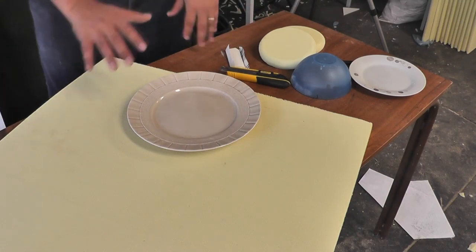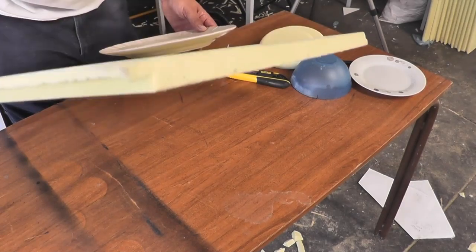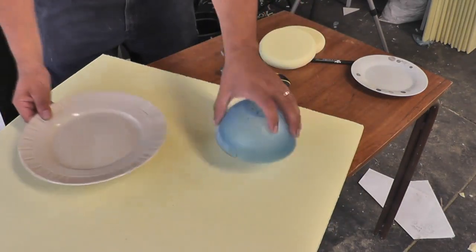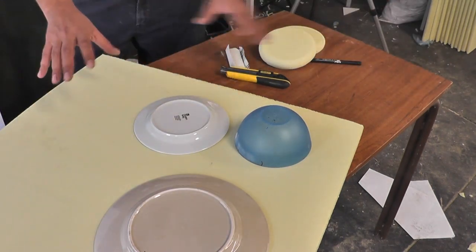So let's have a look at the first couple of things we're going to need. I'm using some high density polystyrene. Mine is just 25mm thick, an inch thick. And I've got some various round shapes here. A small bowl, a plate, a smaller plate. You could use anything that's round.